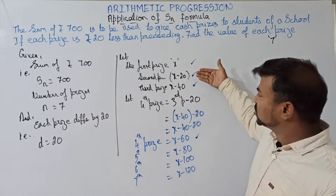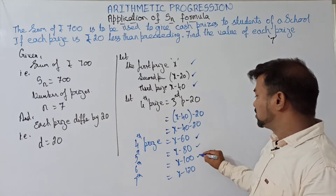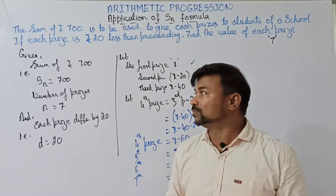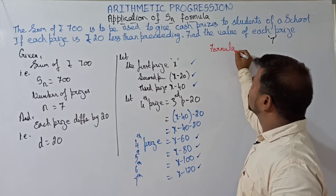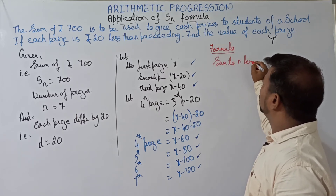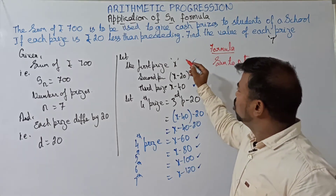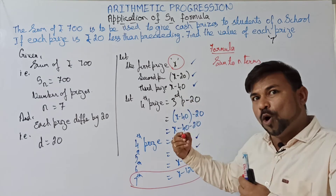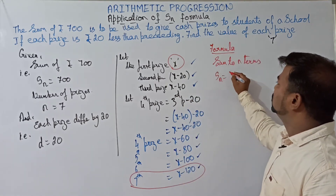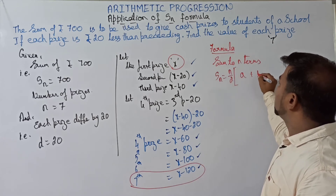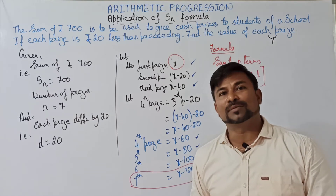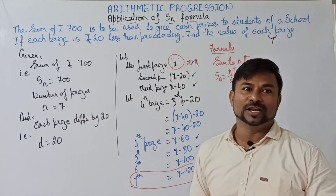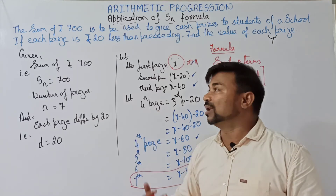Now the tricky part is here. As we are using the sum to n terms formula, we have one more option. Since we know the first term and we know the last term, let us use the formula Sn equals n by 2 into a plus l, where a is the first term and l is the last term. We are taking a as the first price X and l as the last price X minus 120.